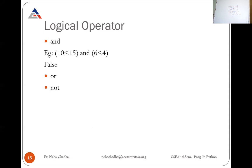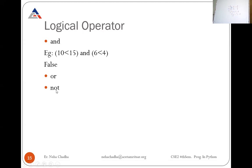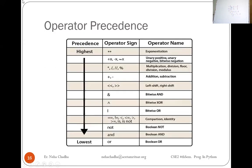Then the logical operator. There are three logical operators in Python: AND, OR, and NOT. For example, 10 < 15 AND 6 < 4 — the answer is false. In the case of AND, both values must be true to get a true result. You can try with OR and NOT as well. In the case of equality, associativity goes from left to right.